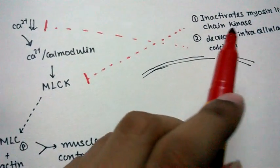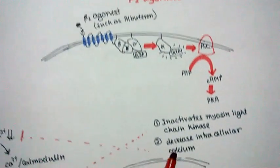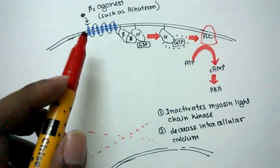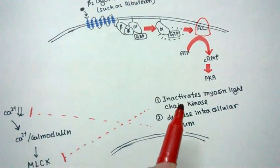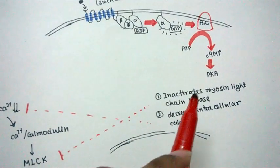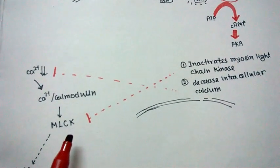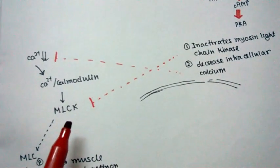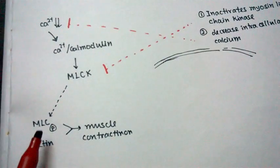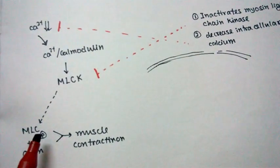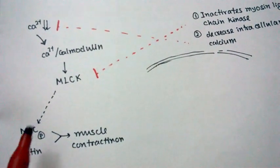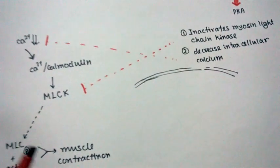As a result of beta-2 agonist binding to the receptor, it imparts a signal which tells the cell to inactivate the myosin light chain kinase. Once MLCK is inactivated, the myosin light chain is not phosphorylated, and these cross bridges are not formed, so muscle contraction cannot take place.